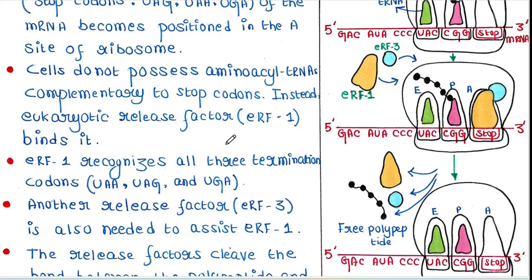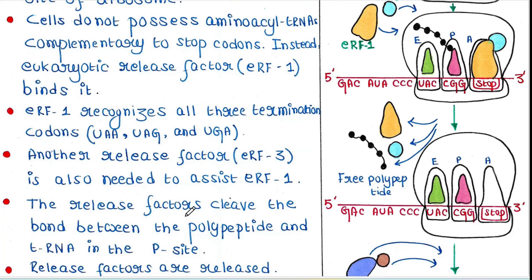Another release factor, eRF3, is also required to assist eRF1. These two release factors bind the ribosome. The release factors cleave the bond between the polypeptide chain and the tRNA in the P site. Once the bond is broken, the polypeptide chain is free and gets released from the ribosome. The release factors are then also released, having done their role.